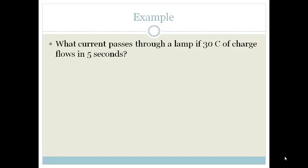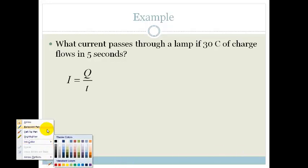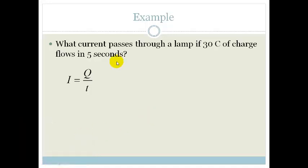Let's look at an example. What current passes through a lamp if 30 coulombs of charge flows in 5 seconds? If we use the equation I equals Q over T, then what are we going to get? We know that I equals Q over T.